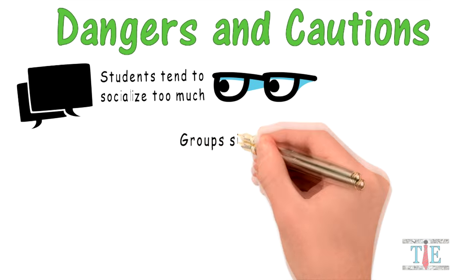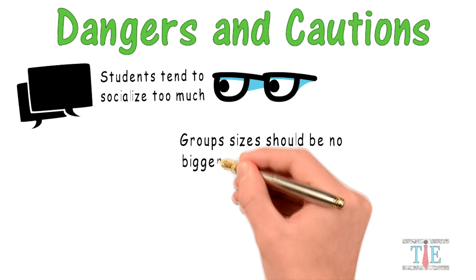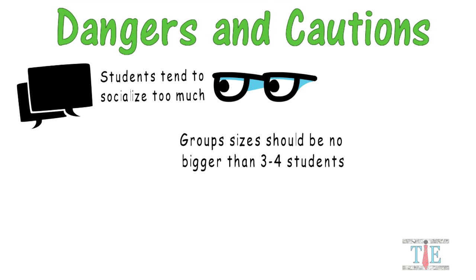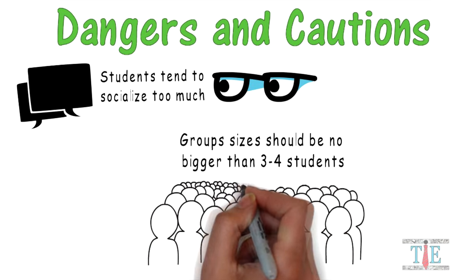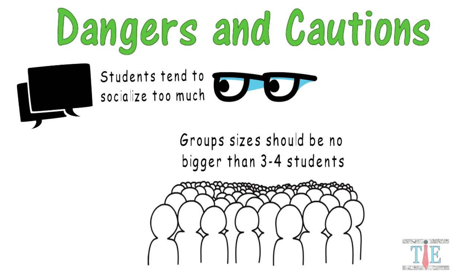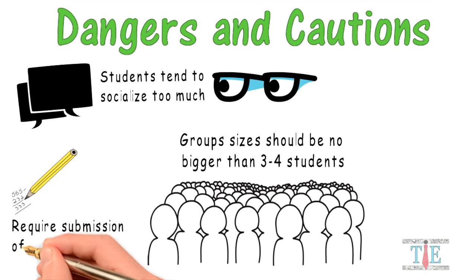Group sizes should be no larger than 3-4 students. The larger the number of students placed in the group, the less work that gets done. In psychology, it's called the Ringelman effect. For cooperative learning to work efficiently, require submission of student work. Make sure these lessons have learning goals and objectives that students must meet.